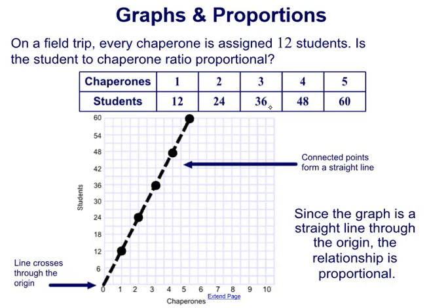But if we were to graph those data points on a coordinate plane, think of the chaperones as the x values and the students as the y values. We have the chaperones on the x-axis, students on the y-axis. So we can see each data point plotted here: 1,12; 2,24; 3,36; 4,48; and 5,60.